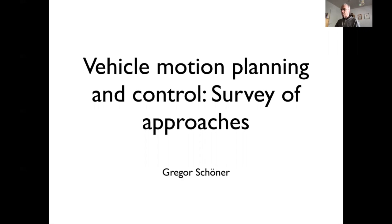This is a survey lecture reviewing a couple of approaches to vehicle motion planning, other than the attractor dynamics approach which we discussed in some depth previously. The goal is twofold: some conceptual clarifications on how to classify these approaches and pointing at the literature, which is large. I also want to discuss a few examples in more detail, primarily the potential field approach, which you already encountered when you read the Fagin-Warren paper.